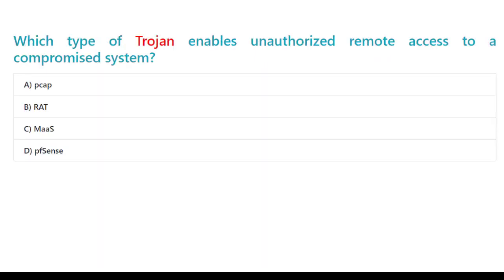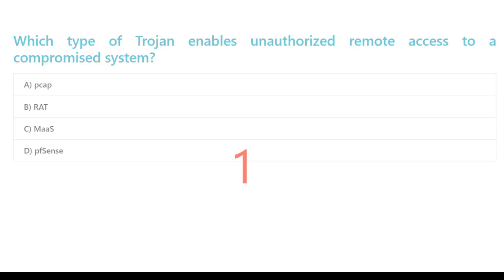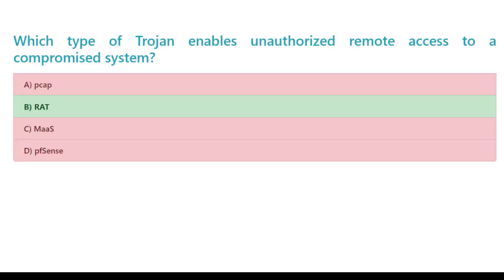Which type of Trojan enables unauthorized remote access to a compromised system? A. CAP. B. RAT. C. MOSS. D. pfSense. The correct answer is B. RAT.